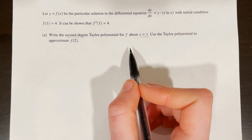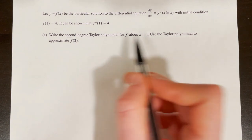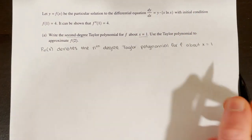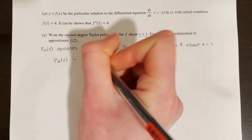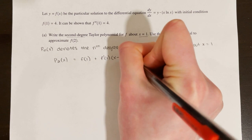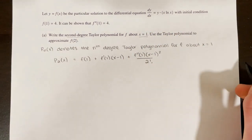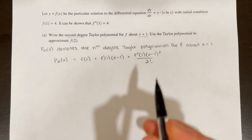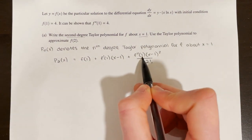Since they did not specifically indicate what p sub n of x means, we say p sub n of x indicates the nth degree Taylor polynomial for f about x equals 1. Then p sub 2 of x equals f of 1 plus f prime of 1 times x minus 1 plus f double prime of 1 times x minus 1 squared over 2 factorial. The values we need to find are f of 1, f prime of 1, and f double prime of 1.